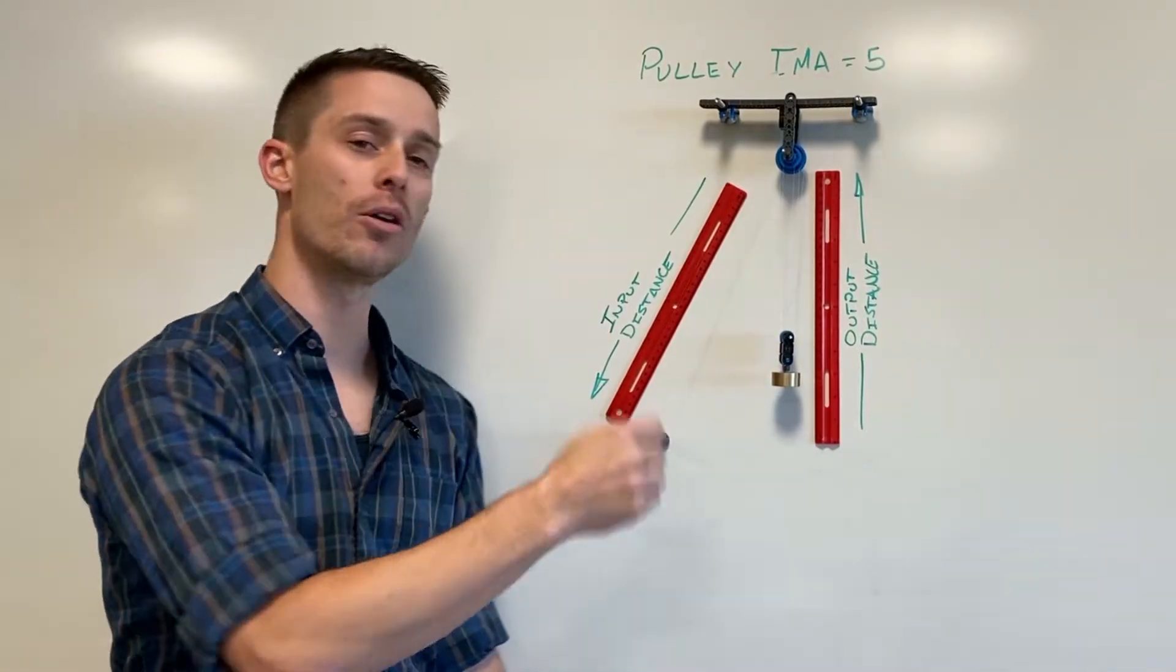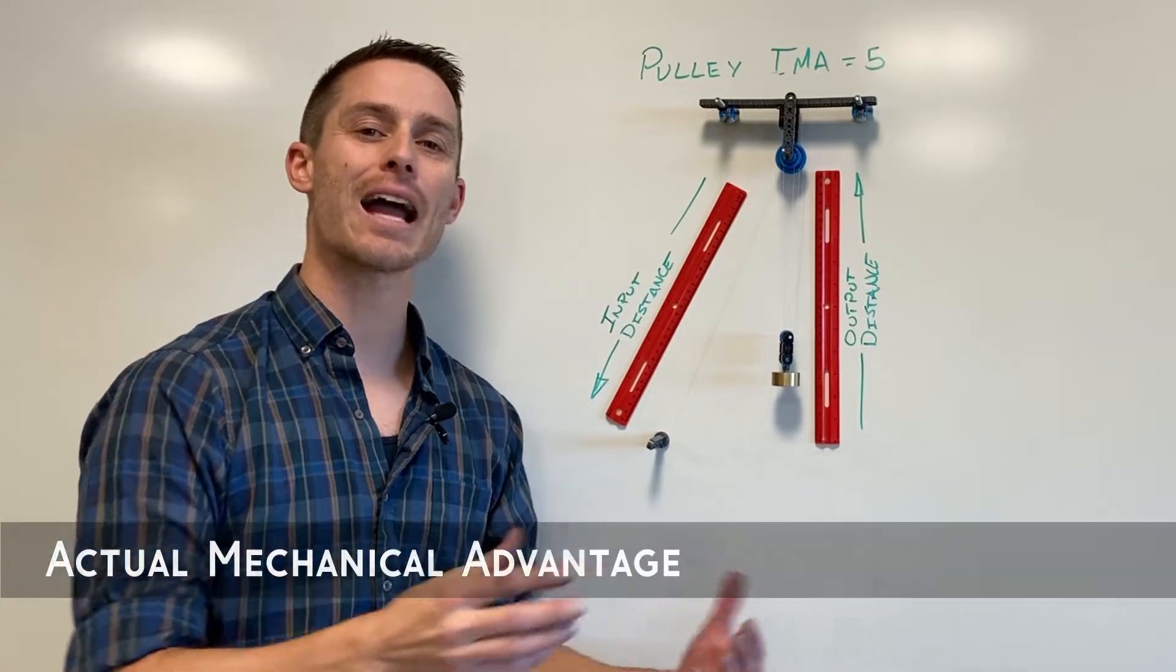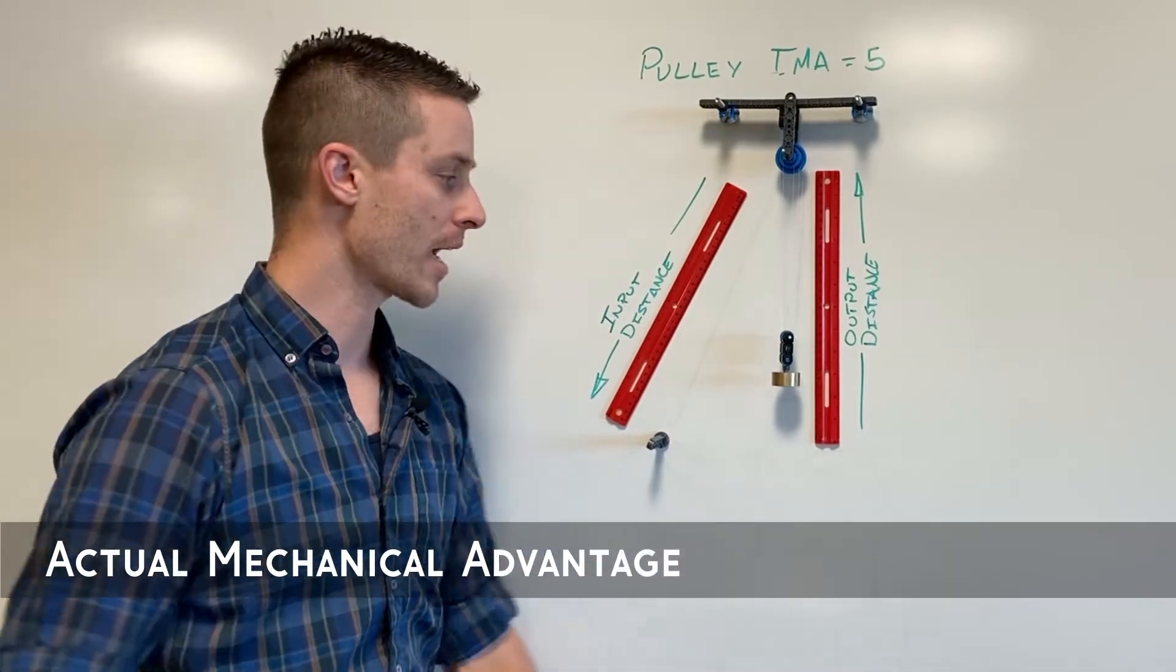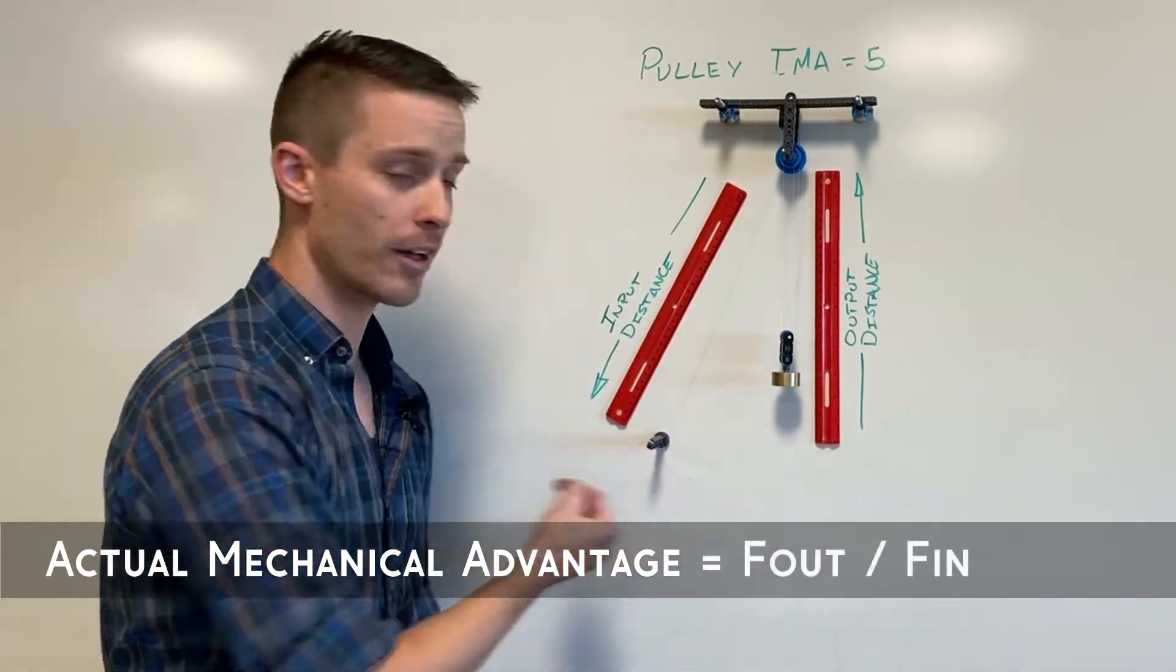This ratio of forces is what we call actual mechanical advantage and it's calculated by the force out divided by the force in.